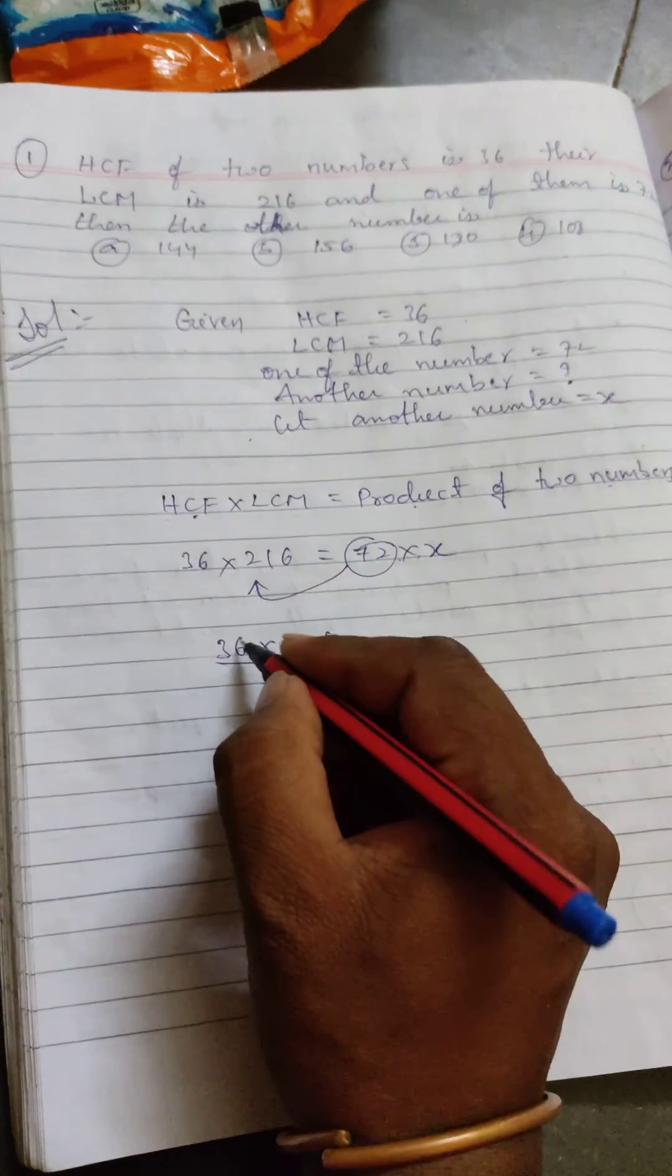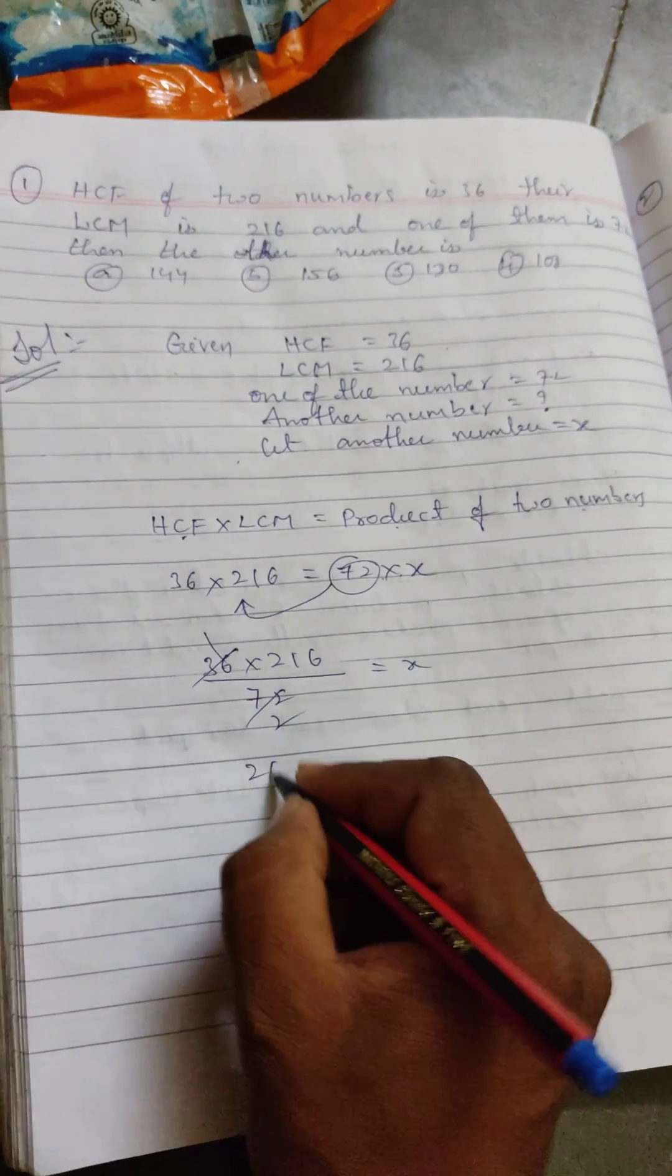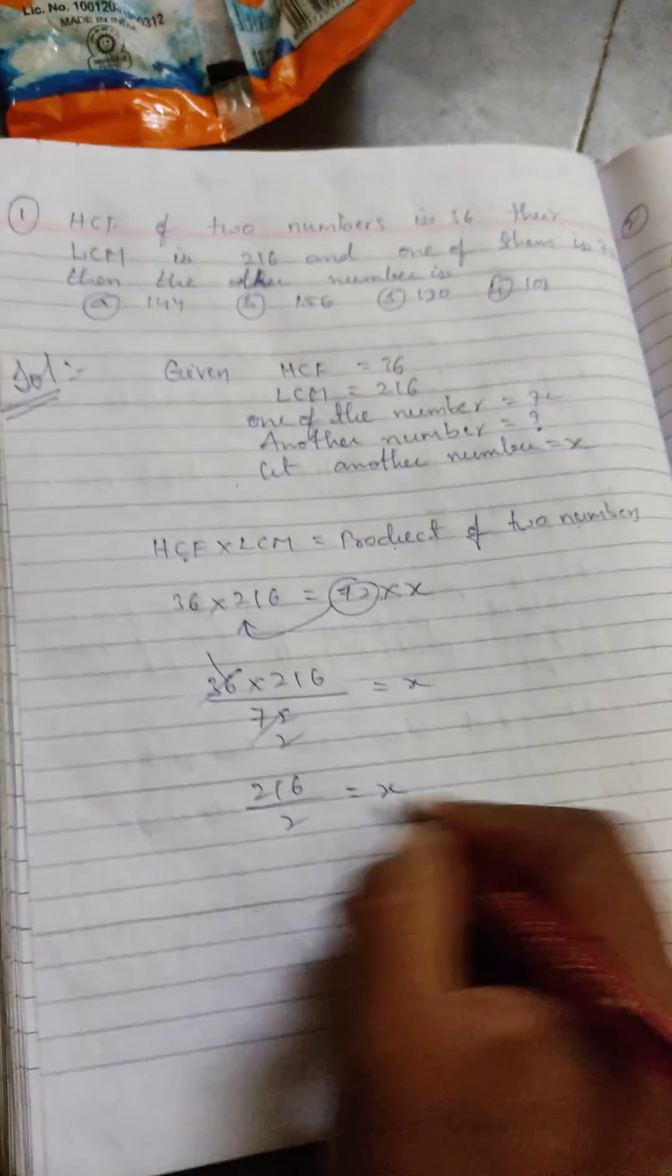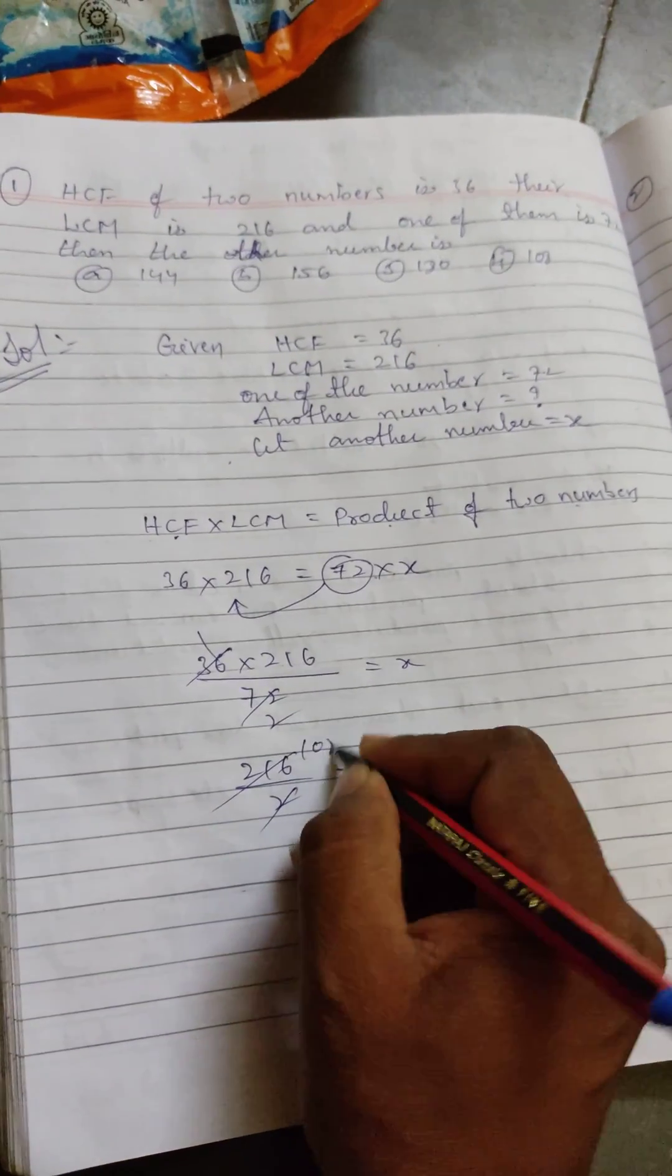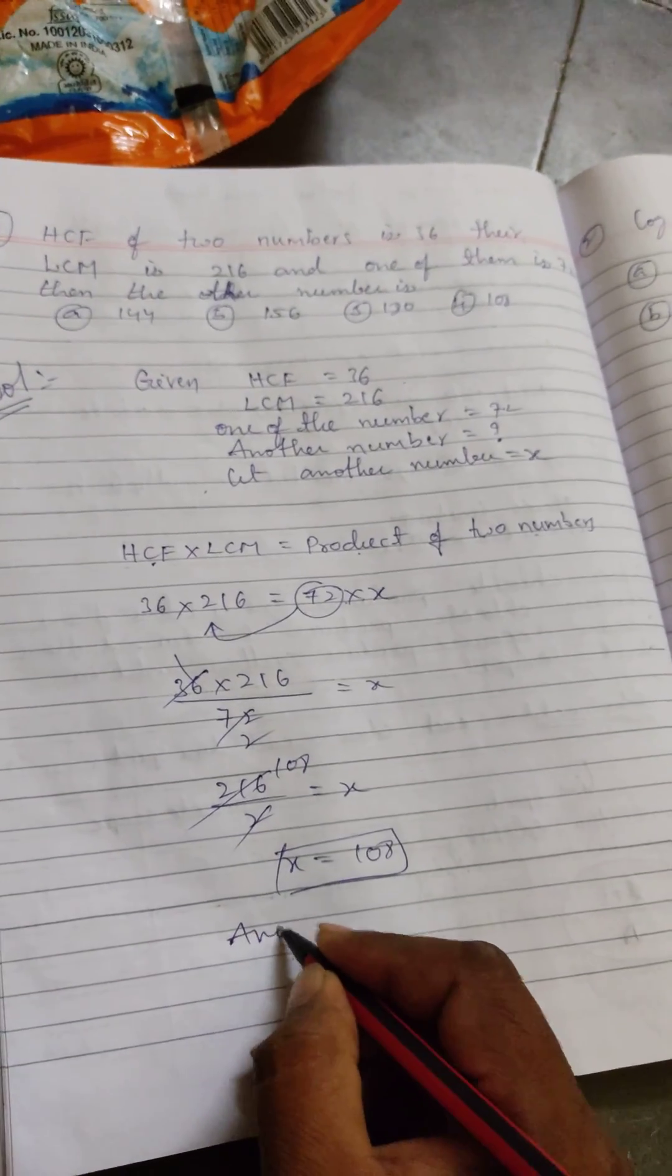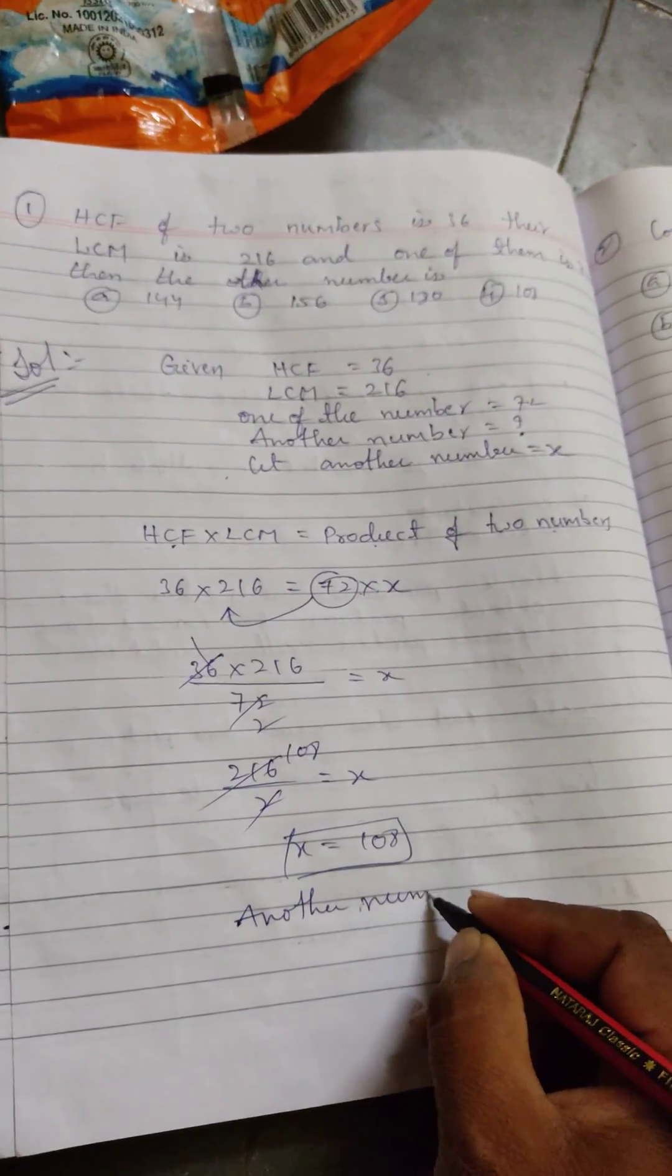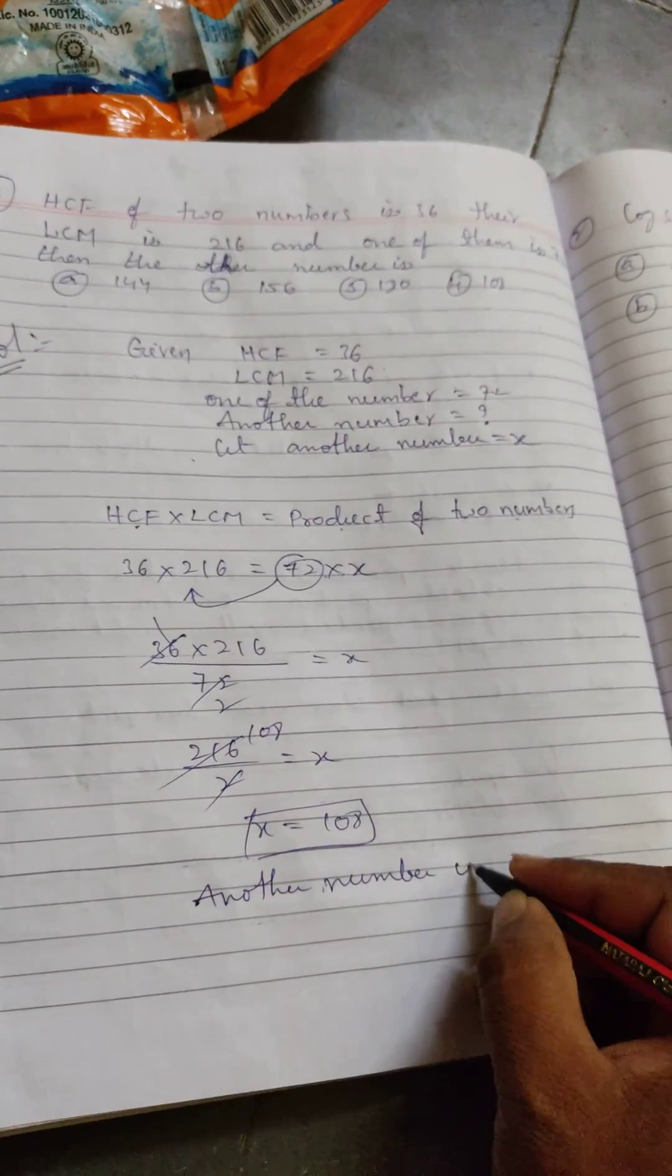36, 2s are, okay, next 2, 216 by 2, 2s are. 1s are, 2, 1s, 8. X is equal to 108. What is another number? Another number is 108.